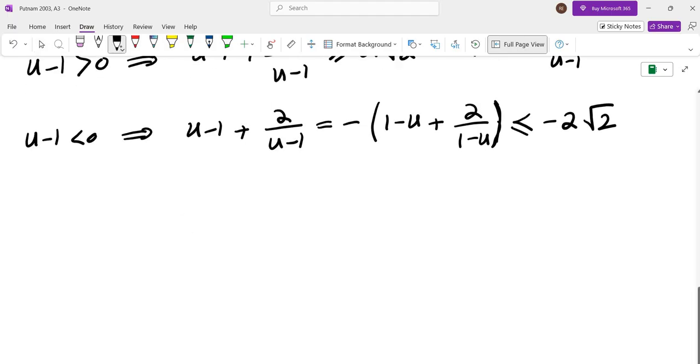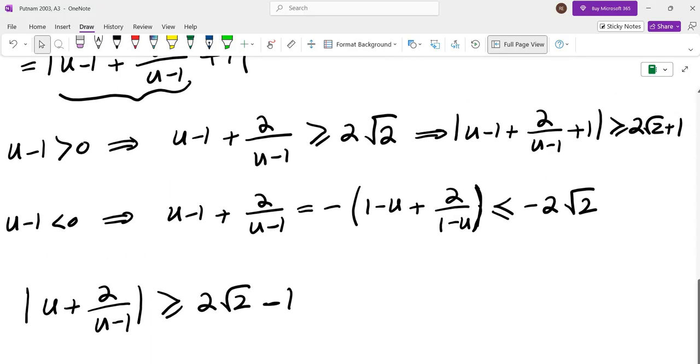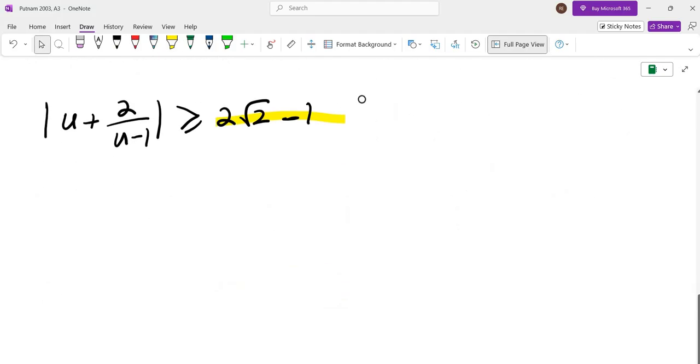After we add one, we get absolute value of u plus two over u minus one is greater than or equal to two root two minus one by adding one. Now which one of these is smaller? Of course, two root two minus one is smaller. And we have to make sure that the equality can hold.